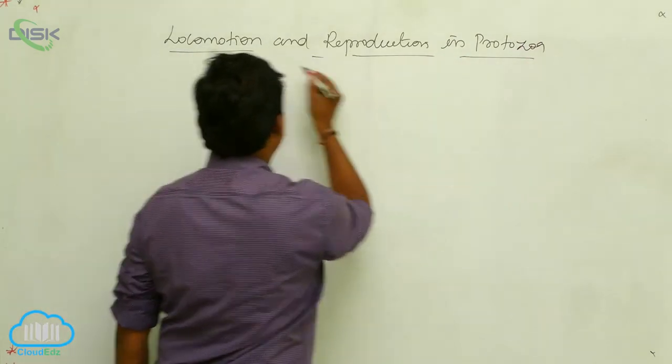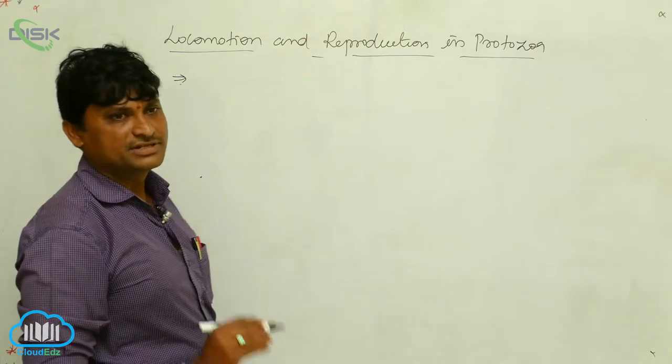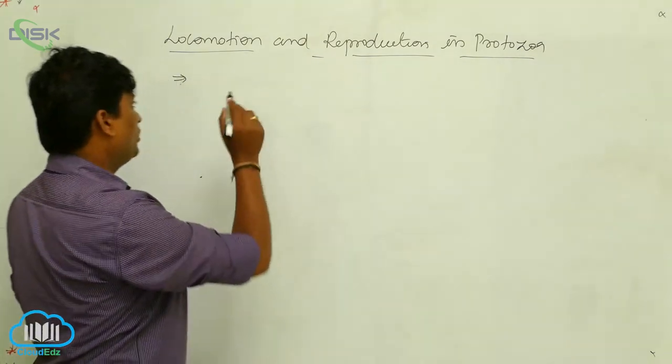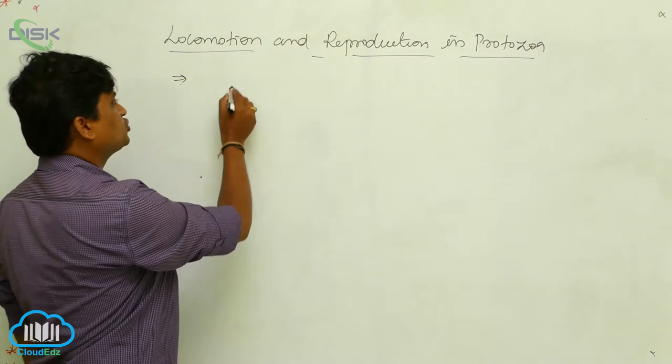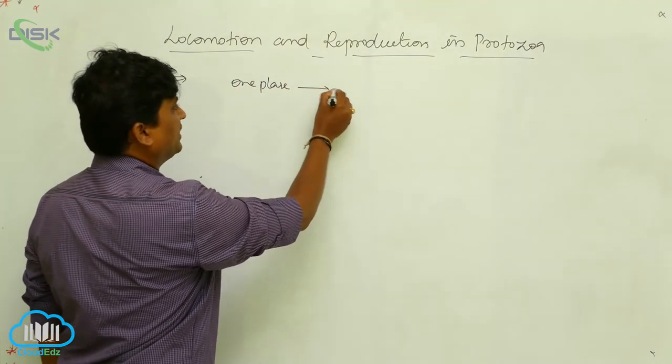First, we must know what is locomotion. All organisms must show locomotion. Locomotion means the organism moves from one place to another.